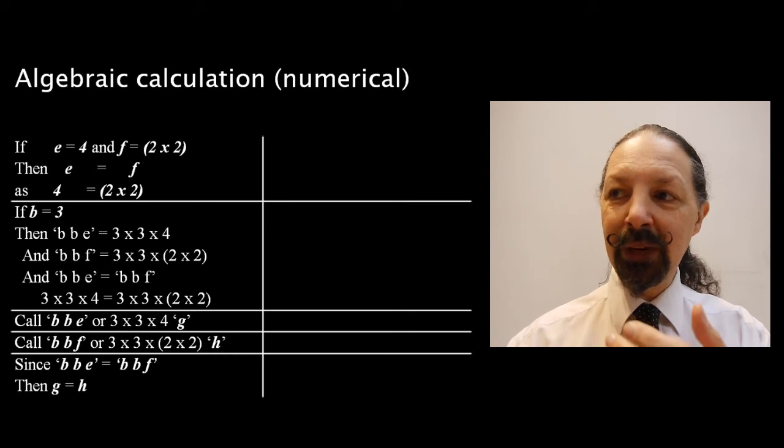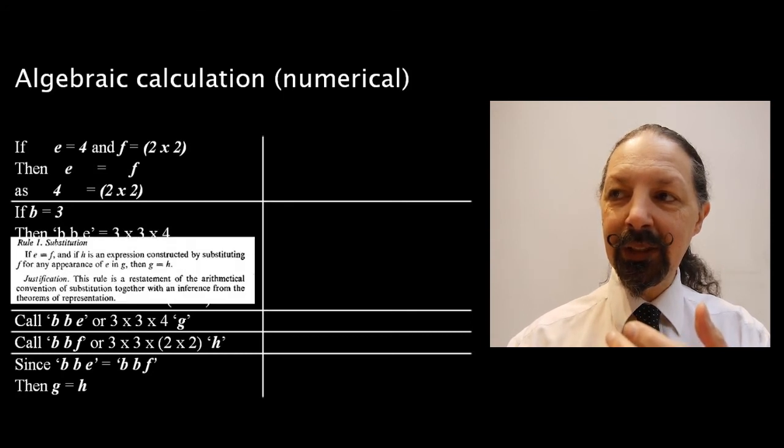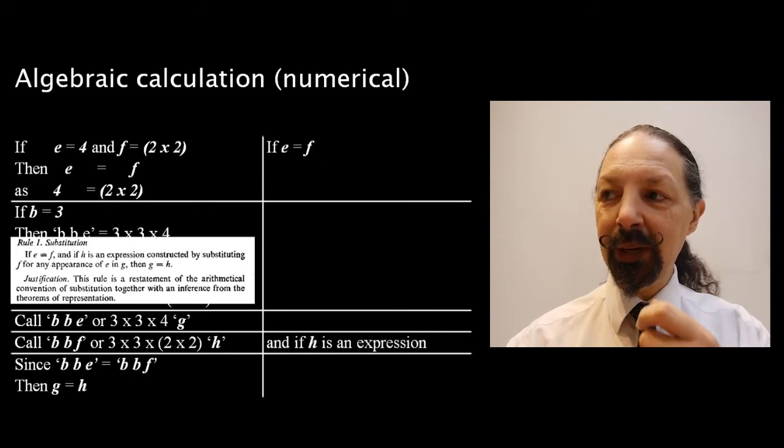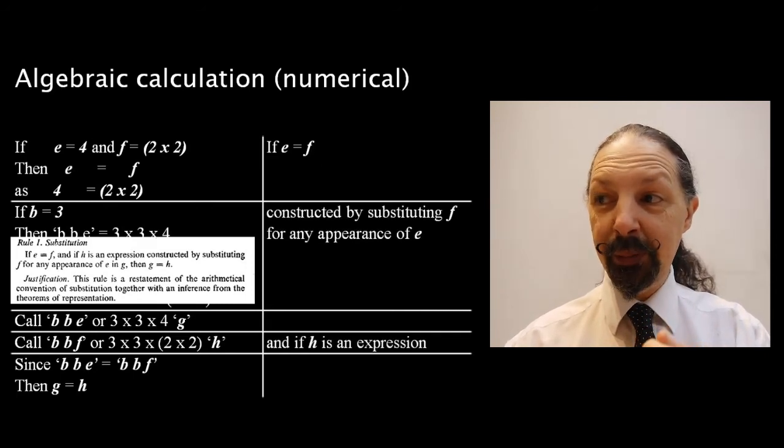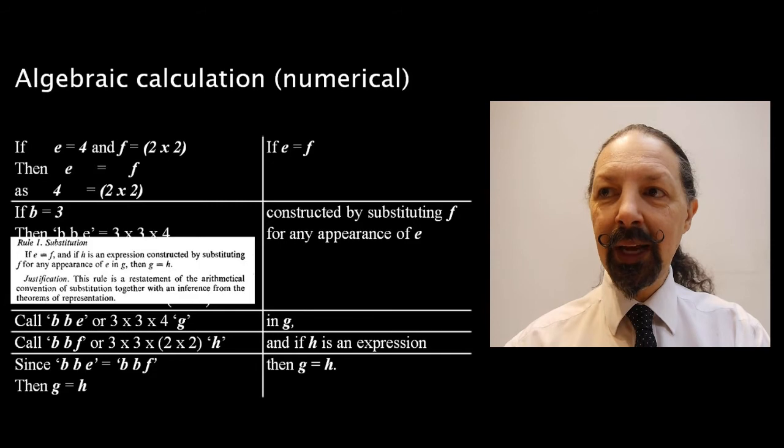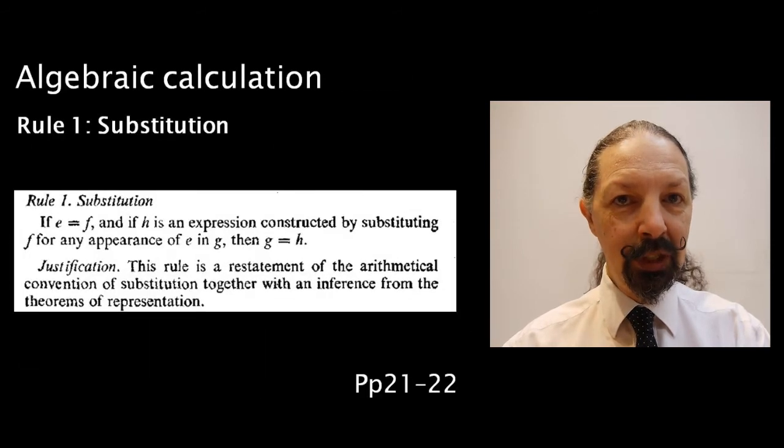Compare it with Spencer Brown's wording, which looks like this. If E equals F, and if H is an expression constructed by substituting F for any appearance of E in G, then G equals H. And that covers rule 1, substitution.